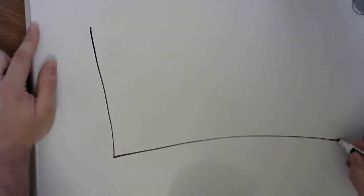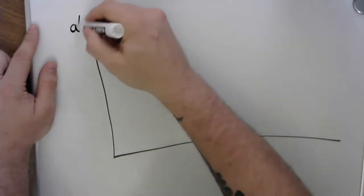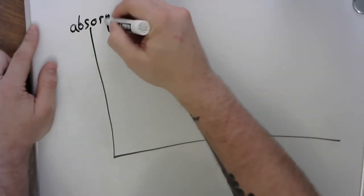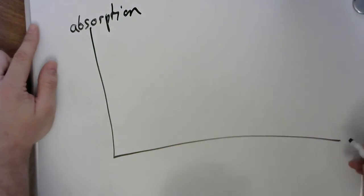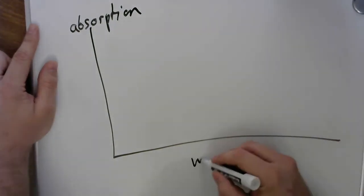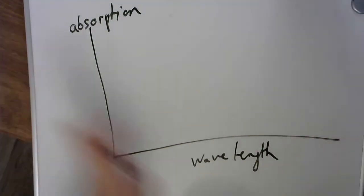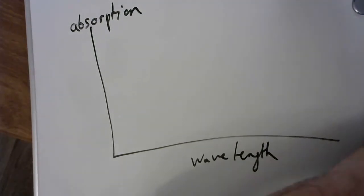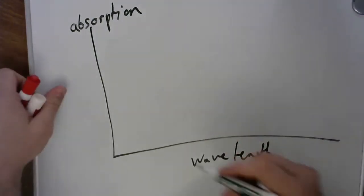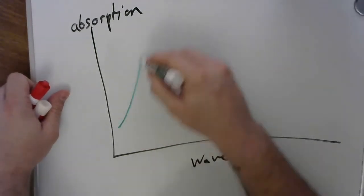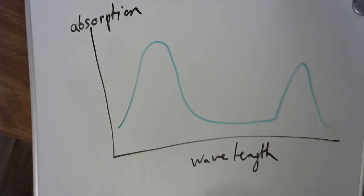So if you remember that graph we have here of absorption and wavelength, I'm going to use different colors to show you. The chlorophyll, and I'm going to be butchering it, but the chlorophyll is something like that.